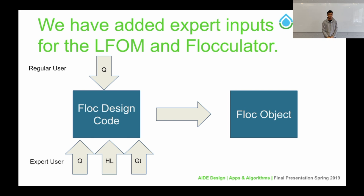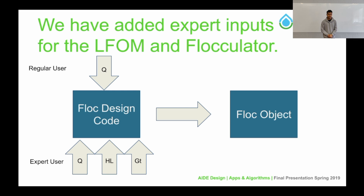We've also added expert inputs for the LFOM and the flocculator, breaking functionality into regular user versus expert user. A regular user just wants to create a minimum viable product, so when they initialize a flocculator object, the only parameter included is the flow rate Q. However, an expert user wants more control over how the flocculator is created, so they can initialize additional inputs such as flow rate, head loss, total fluid water deformation, temperature, and so on. This distinction separates a person who wants control of construction from one who's just initializing an object to complete the plant.